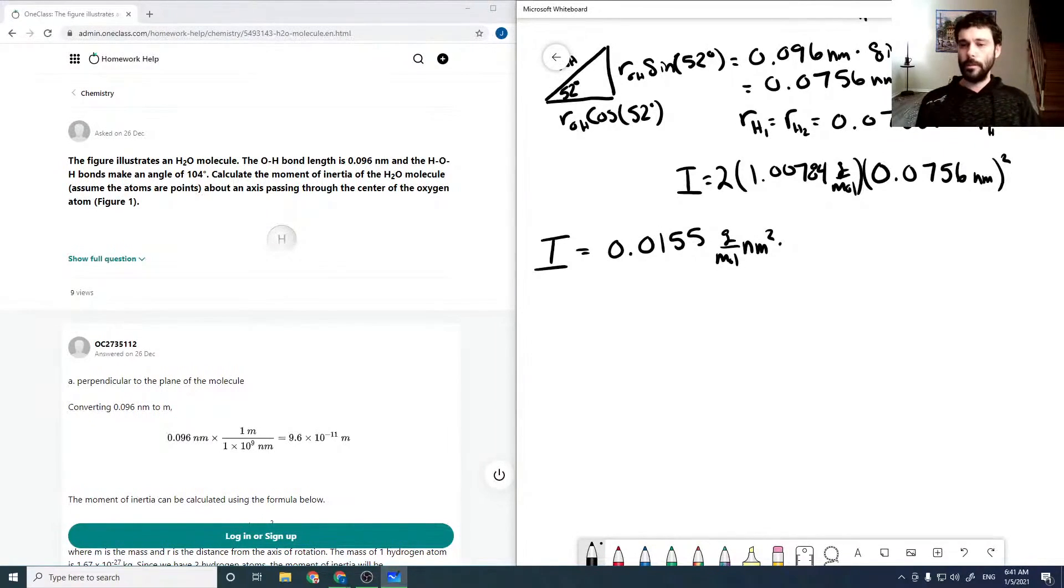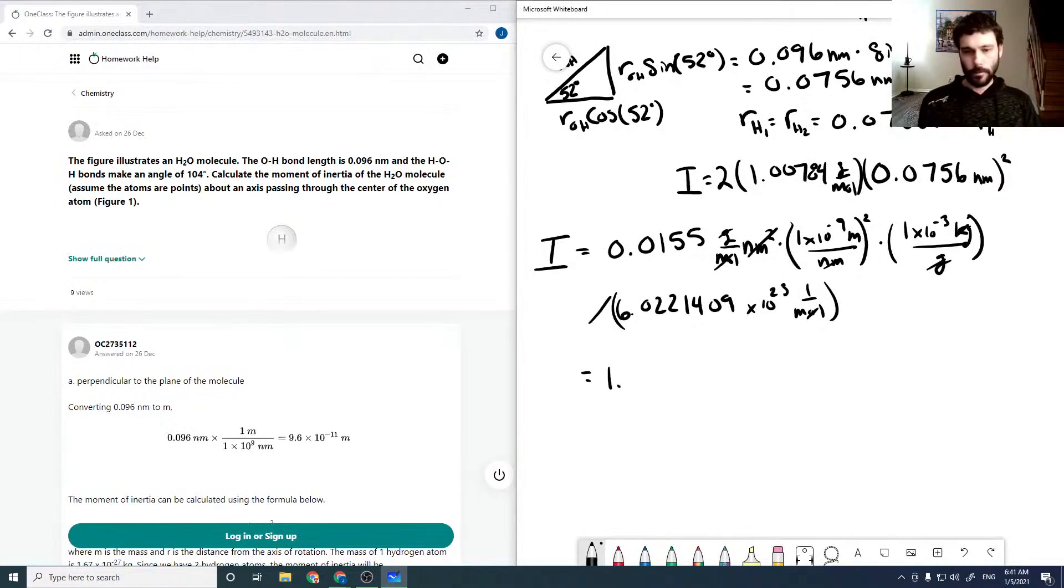Now if we run this through our calculator, this comes out to be 0.0155 grams per mole nanometers squared. Again, I just want to convert it to kilograms meters squared because that's the typical units. So I just use 10 to the minus 9 meters per nanometer, 10 to the minus 3 kilograms per gram. And then we're going to divide the whole thing by Avogadro's number. And so this will cancel the moles, the nanometers, and the grams, leaving us with kilograms meters squared, which is 1.9155 times 10 to the minus 47 kilograms meters squared.